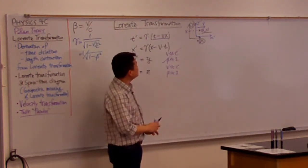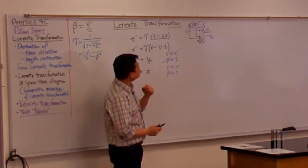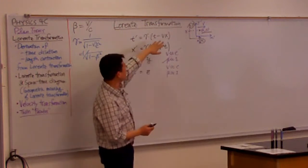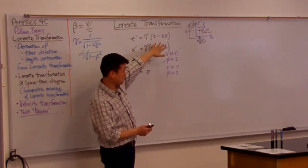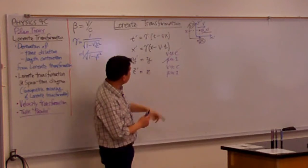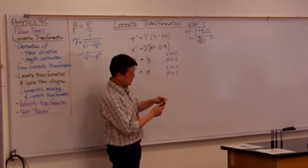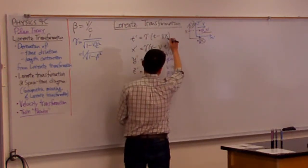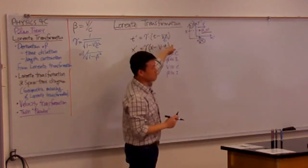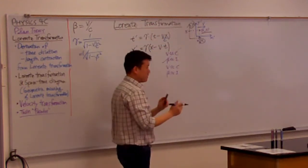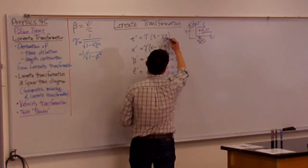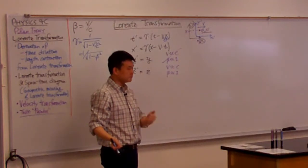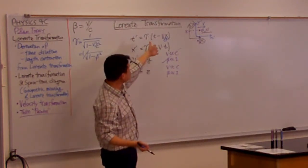So what I'm going to do is I'm going to introduce the correct number of factors of C to make this expression come out correct unit-wise. So I'll leave T alone. Let me try dividing by one factor of C. That might make things a little bit better. So it's a second minus meter. A little bit better, but not that much better. So C squared, maybe. Are the units correct? Yeah? Good. So that's the correct expression.